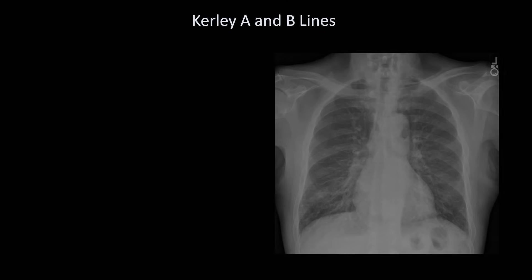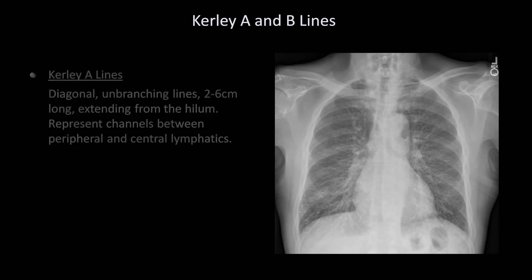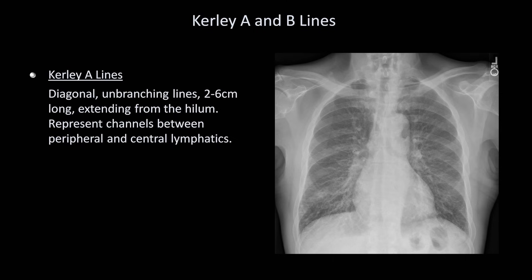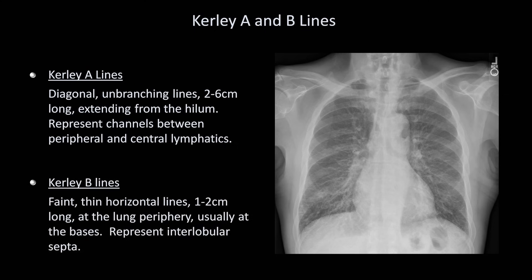Next are curly A and B lines. Curly A lines are diagonal, unbranching lines 2-6 cm long extending from the hilum, representing channels between peripheral and central lymphatics. Curly B lines are faint, thin horizontal lines 1-2 cm long at the lung periphery, usually at the bases, representing interlobular septa. In general, curly B lines are much more commonly seen and commonly referred to than curly A lines.